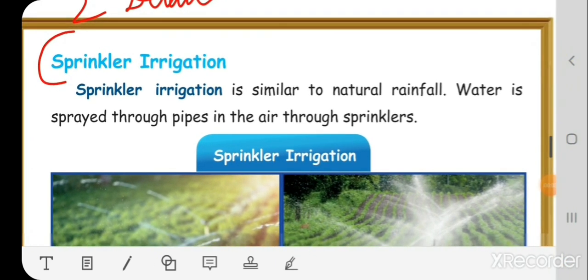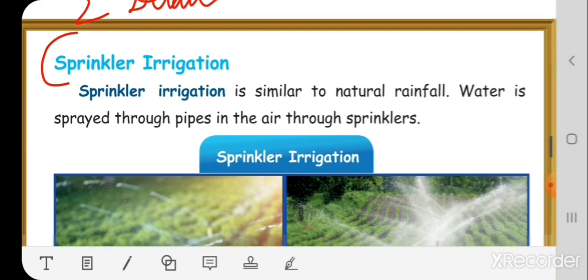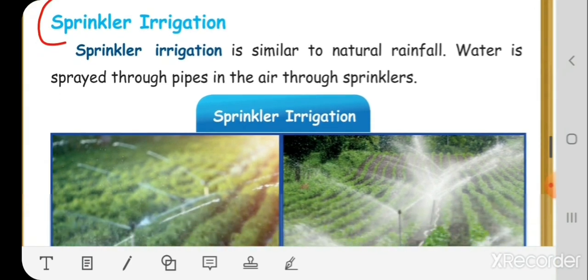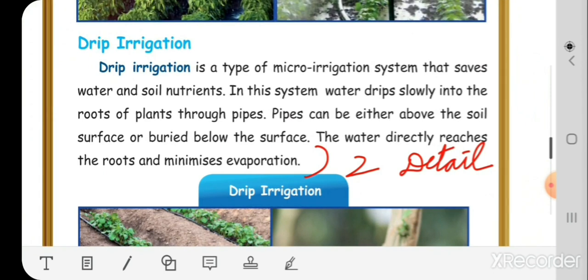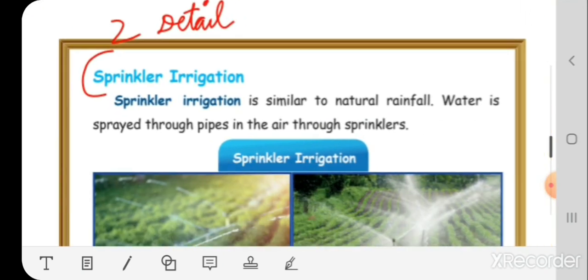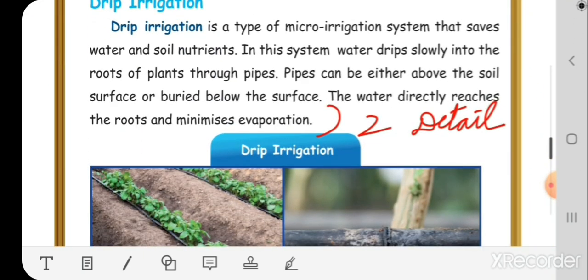Sprinkler irrigation is similar to natural rainfall. Water is sprayed through pipes in the air through sprinklers. Drip irrigation is a type of micro irrigation system that saves water and soil nutrients. In this system, water drips slowly into the roots of plants through pipes. Pipes can be either above the soil surface or buried below. The water directly reaches the root and minimizes evaporation. So these are the different types of irrigation for the second detail.